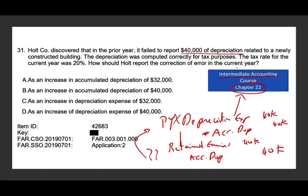Looking at the options: option A is an increase in accumulated depreciation of $32,000 — not applicable because for tax purposes it was computed correctly, so we don't worry about the tax effect. Option B is an increase in accumulated depreciation of $40,000 — that looks correct. Options C and D involve an increase in depreciation expense, but depreciation expense is closed and you can no longer go back and fix that. Therefore the entry is to debit retained earnings and credit accumulated depreciation for $40,000, and the answer is B.